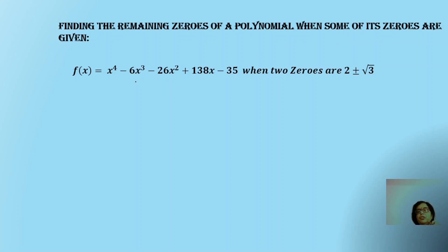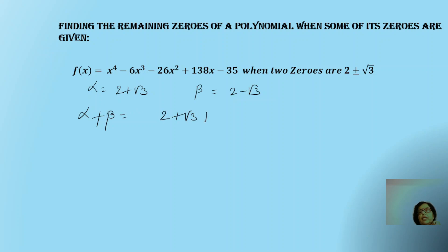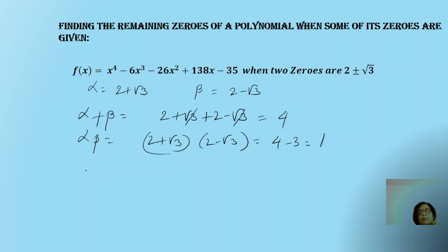Here, f(x) is a fourth-degree polynomial and two of its zeros are given: 2 ± √3. We need to find the other two zeros using the division algorithm. Let alpha = 2 + √3 and beta = 2 − √3. The sum of the zeros: alpha + beta = 2 + √3 + 2 − √3 = 4. The product: alpha × beta = (2 + √3)(2 − √3) = 4 − 3 = 1. So the polynomial we can frame is x² − (sum of zeros)x + (product), which gives x² − 4x + 1. We now divide the original polynomial by this generated polynomial.